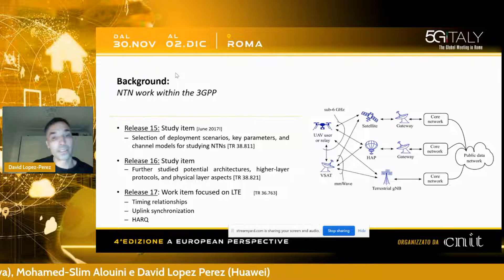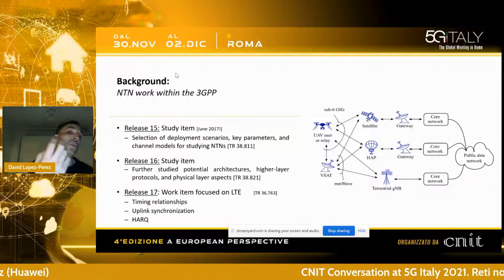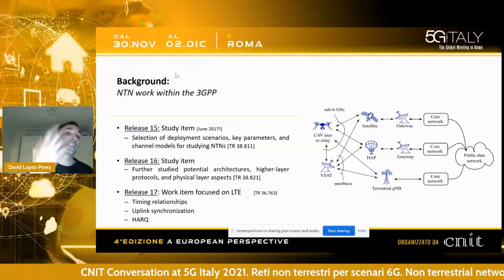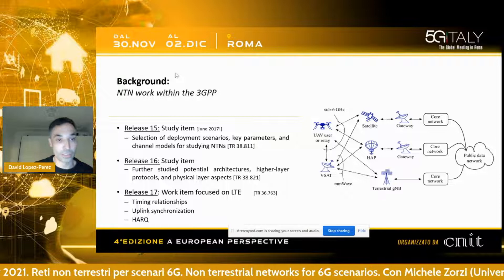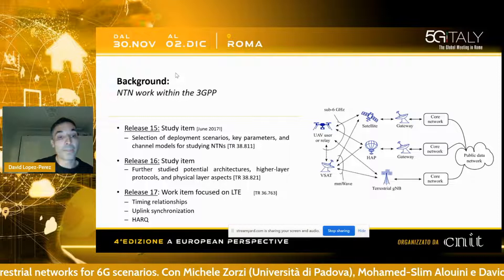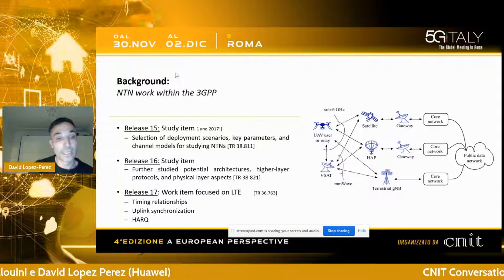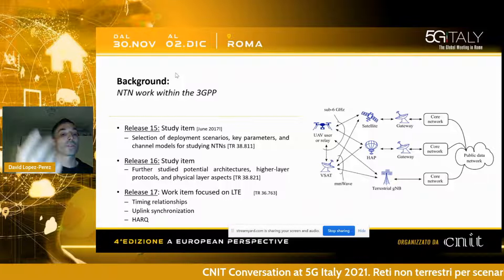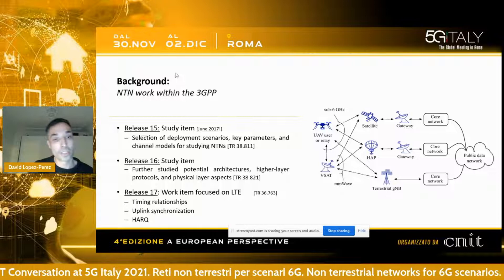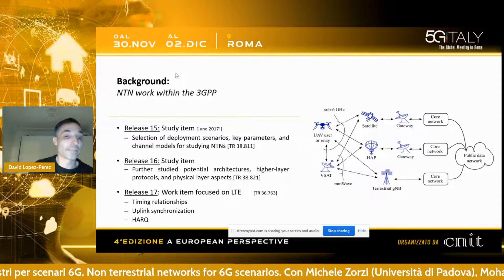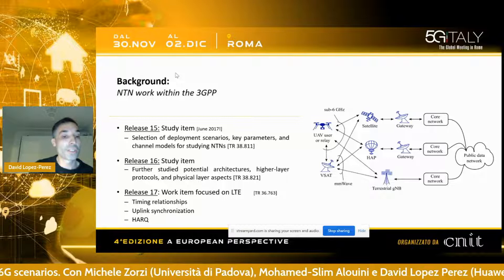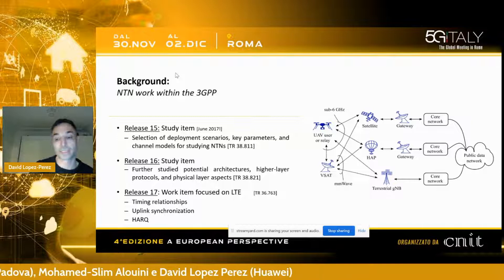Now, what are we doing in the industry to make all these use cases possible? The 3GPP, which is the body standardizing cellular technology, has been working since Release 15 specifying non-terrestrial features for its latest technology, New Radio. In Release 15, the study item selected deployment scenarios, key parameters, and channel models. Release 16 further studied potential architectures, high-layer protocols, and physical layer aspects. In Release 17, the work item started with specification work done around timing relationships, uplink synchronization, and enhancements on HARQ processes.